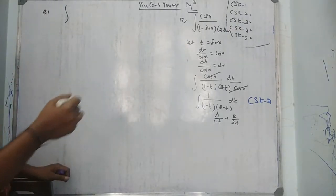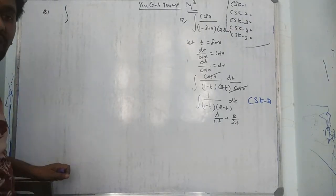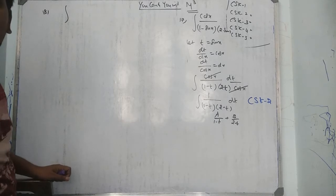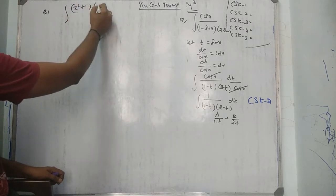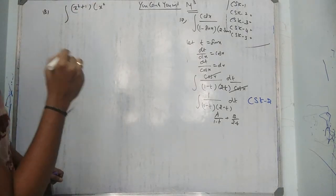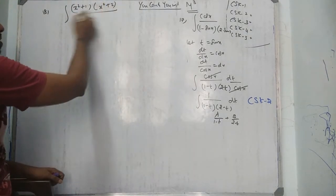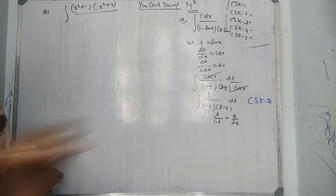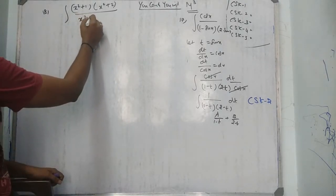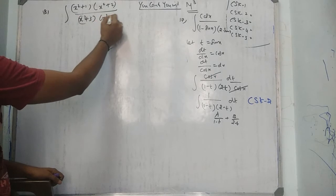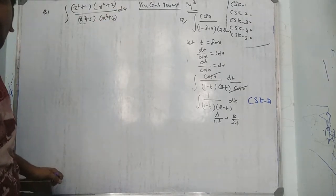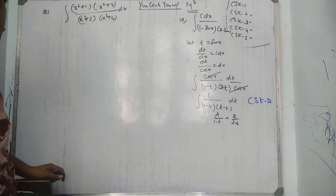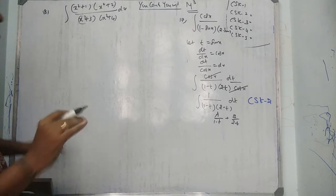Question number 18: integration of (x² + 1)(x² + 2) over (x² + 3)(x² + 4) dx. So we have x² + 1 times x² + 2 over x² + 3 times x² + 4 dx.